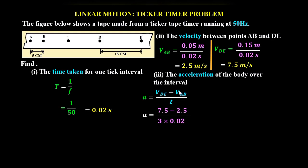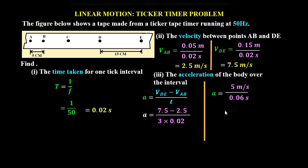Working this out, the numerator is 5 meters per second and the denominator is 0.06 seconds. So the acceleration is 83.333 meters per second squared.